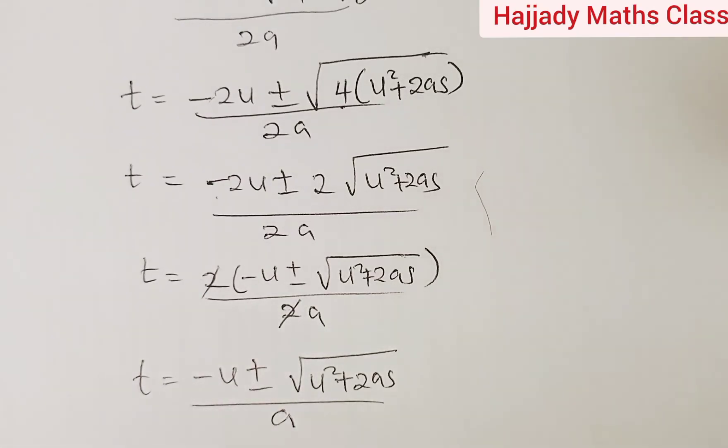So this is what we have when we simplify further using the quadratic formula approach. So making t the subject of the formula, this is what we are going to have. You can see that your t is on the left-hand side while the other variables are on the right-hand side.